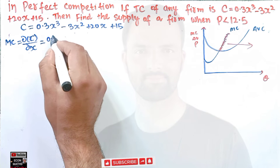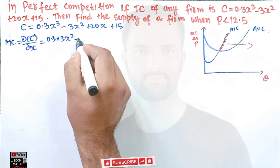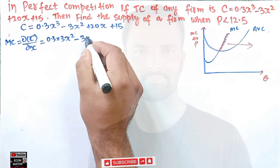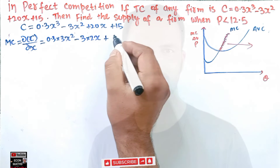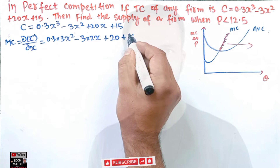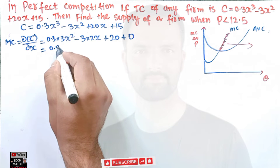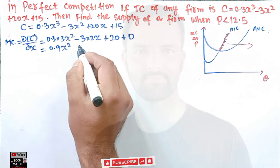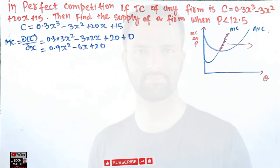Continuing the derivative: the derivative of -3x² is -6x, and the derivative of 20x is 20. The derivative of the constant 15 is 0. So our marginal cost is MC = 0.9x² - 6x + 20.